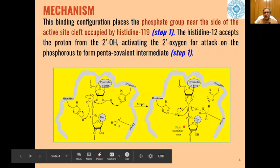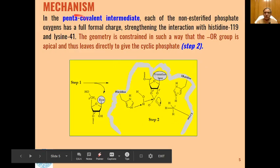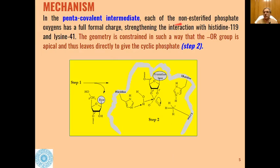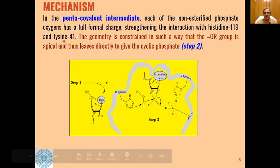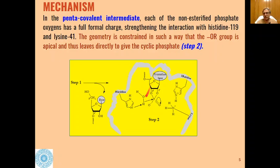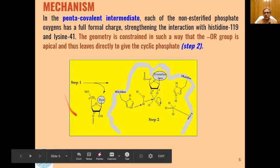Then in the second step, this pentacovalent intermediate undergoes removal of one part of the product through interaction with histidine-119 and lysine-41. The geometry is constructed such that the OR part is apical, and this leaves directly to give a cyclic phosphate.